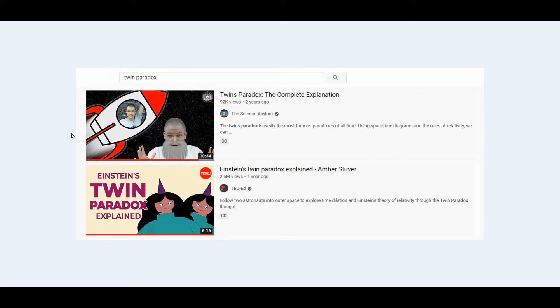These popular YouTube videos claim to explain the twins paradox from Einstein's special relativity. We will figure out what they are doing wrong because the twins paradox, or the clock paradox, cannot be avoided.